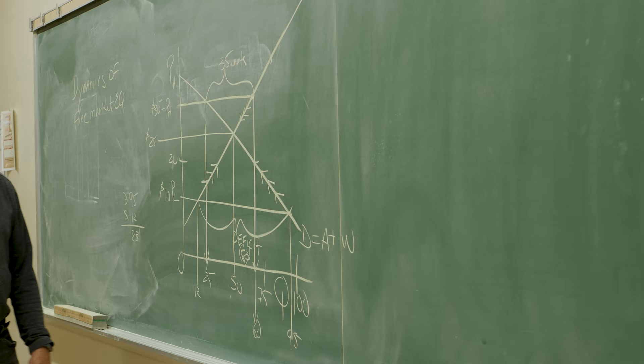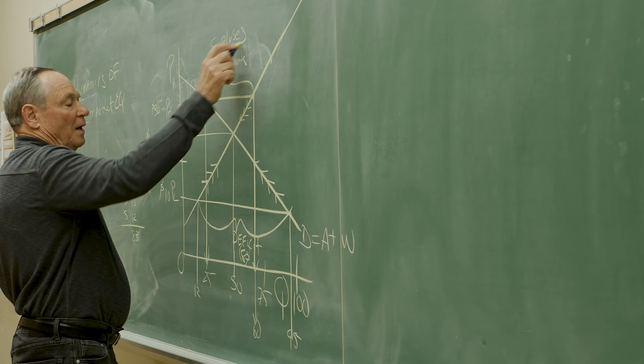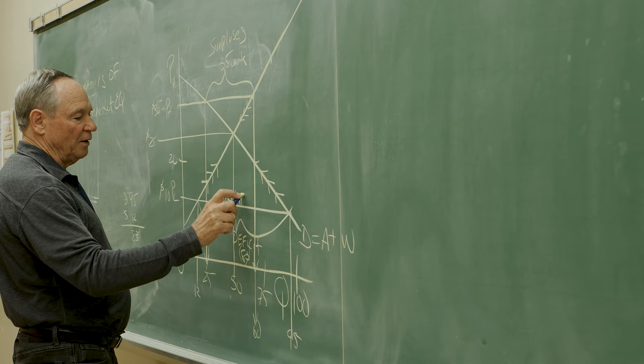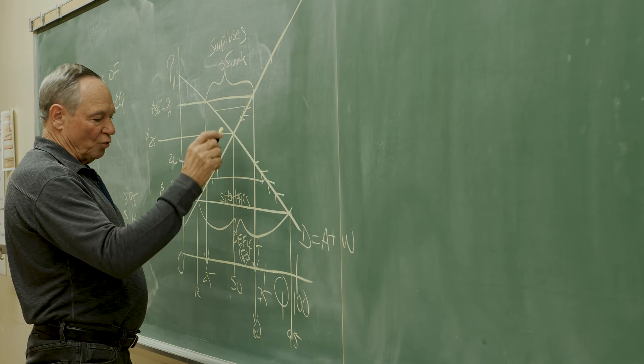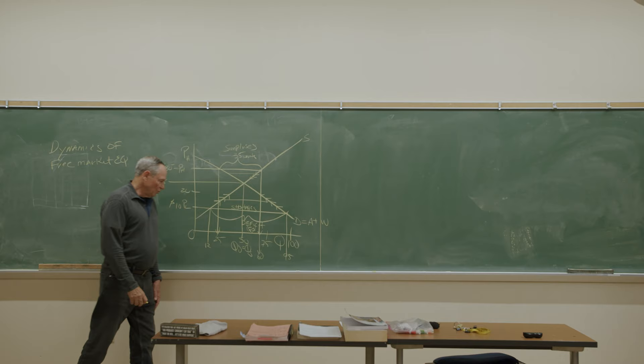This process of surpluses and shortages then continues to operate and interact until we get closer and closer to the point where quantity demanded is equal to quantity supplied, and that's the term described as equilibrium. Quantity demanded equal to quantity supplied.